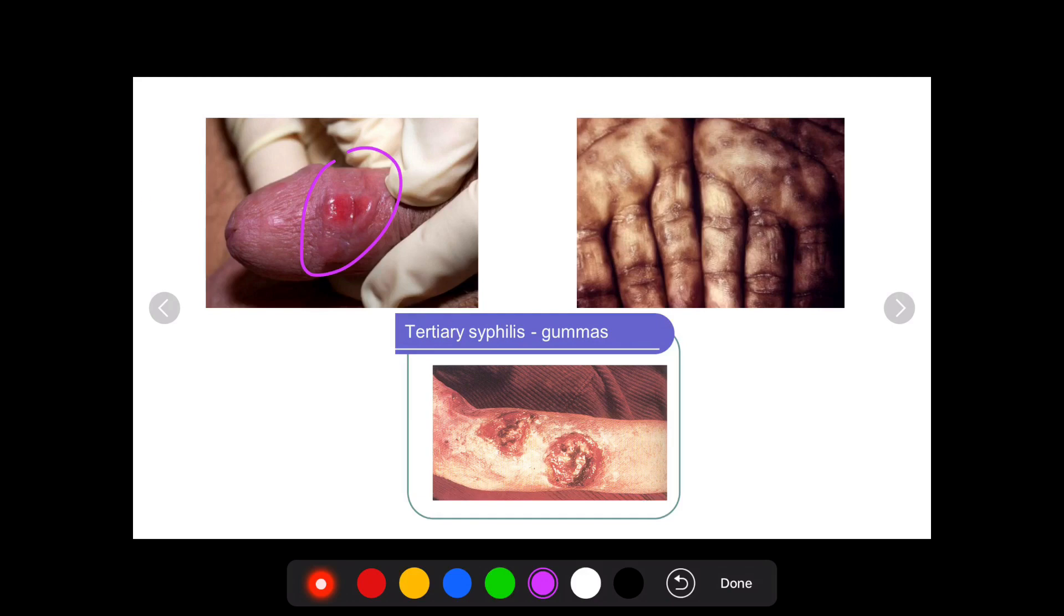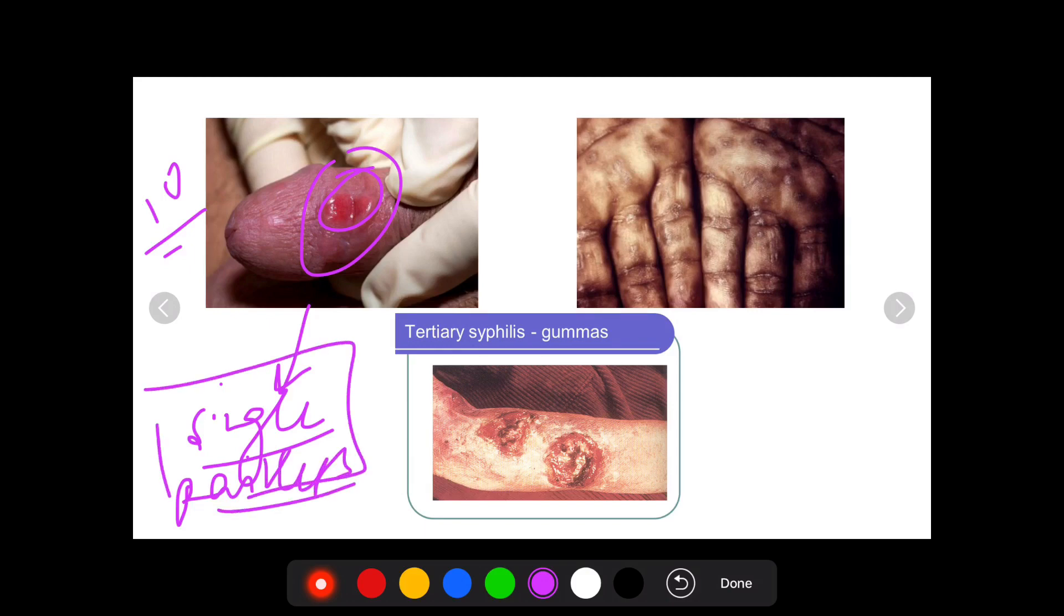Syphilitic chancre, as you can see in this photo, it has three characteristics: that it's single, it's not multiple, it's just a single ulcer. Second, it's indurated. As you can see, it has a reddish base. And third, that it's painless. There's no pain associated with it. These are the three characteristics: single, painless, indurated.